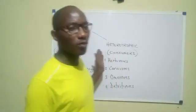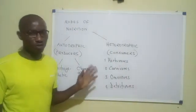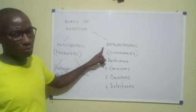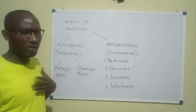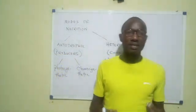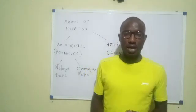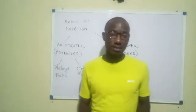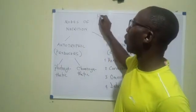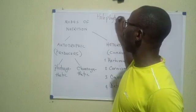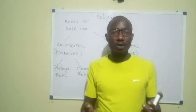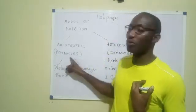In terms of mode of nutrition, there are two main modes: the autotrophic mode and the heterotrophic mode. 'Auto' means self, 'trophic' means feeding. Autotrophs are organisms that feed themselves in that they manufacture their own food — these are essentially the plants and some microorganisms. Autotrophic nutrition is also called holophytic nutrition, meaning autotrophs can also be called holophytes. Because they make their own food, we call them producers.